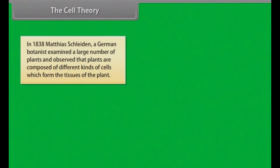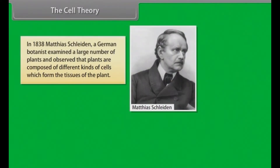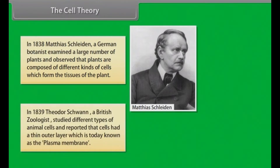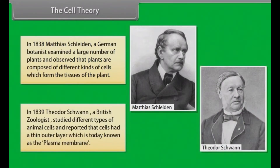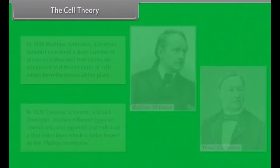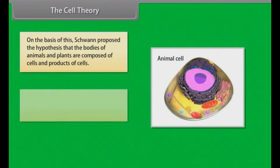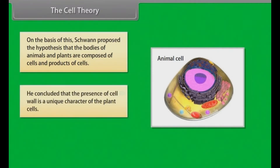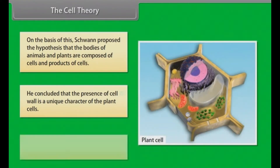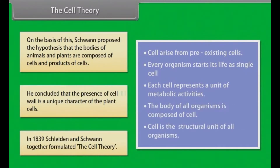In 1838, Matthias Schleiden, a German botanist, examined a large number of plants and observed that plants are composed of different kinds of cells which form the tissues of the plant. In 1839, Theodore Schwan, a British zoologist, studied different types of animal cells and reported that cells had a thin outer layer, today known as the plasma membrane. Schwan proposed the hypothesis that the bodies of animals and plants are composed of cells and products of cells, and concluded that the presence of a cell wall is a unique character of plant cells. Schleiden and Schwan together formulated the cell theory.